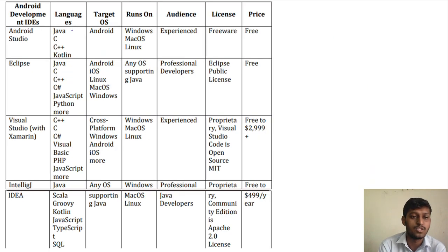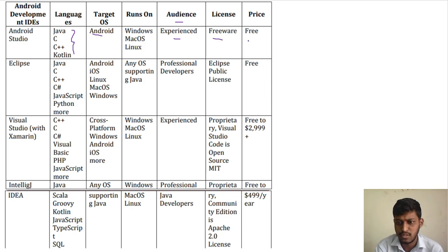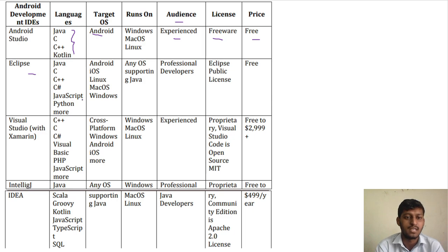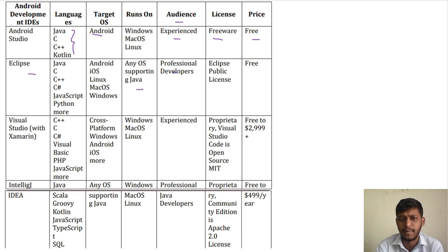In Android Studio, the supported languages are Java, C, C++, and Kotlin. It runs on Windows, Mac OS, and Linux. The audience is experienced developers, but students can use it as well. The license is free of cost. For Eclipse IDE, the supported languages are Java, C++, and Python. It runs on Android, iOS, Linux, Mac OS, and Windows — essentially any operating system supporting Java. It is used by professional developers but students can use it too. The license is Eclipse Public License and it is free of cost.